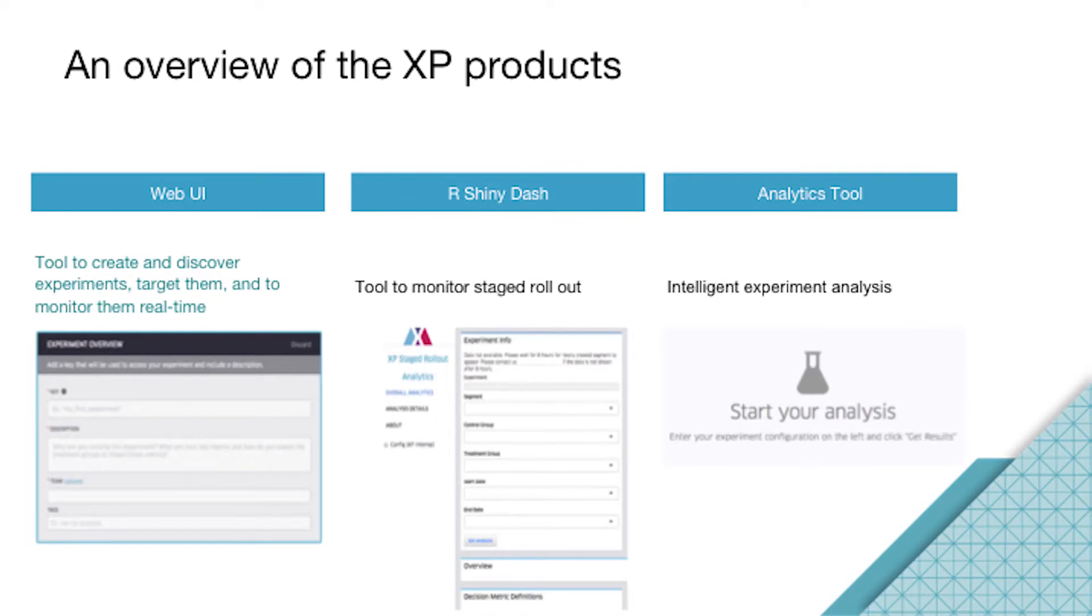We want to provide the best user experience for software engineers at Uber and make their life easier to roll out experiments. We provide three main tools. First is a web UI. On this web UI, you can create the experiment key, select the audience, choose the percentage between control and treatment groups, choose which city you want to impact, and just click a button and this experiment is ready to go.